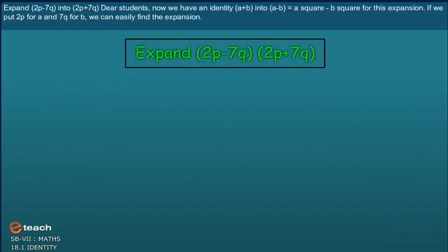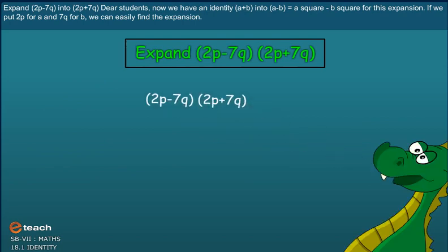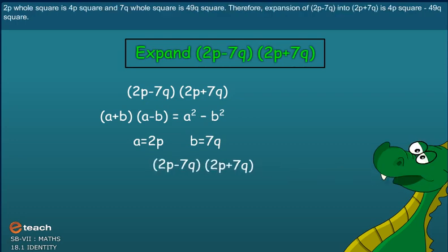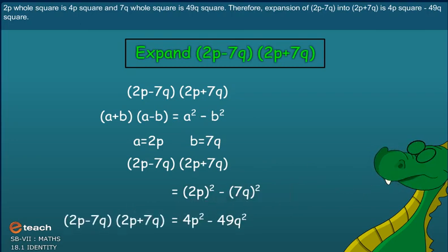Now expand 2P minus 7Q into 2P plus 7Q. We use the identity A plus B into A minus B equals A square minus B square. Putting 2P for A and 7Q for B, we get 2P whole square minus 7Q whole square. Since 2P whole square is 4P square and 7Q whole square is 49Q square, the expansion of 2P minus 7Q into 2P plus 7Q is 4P square minus 49Q square.